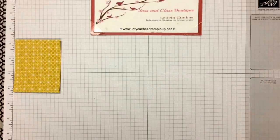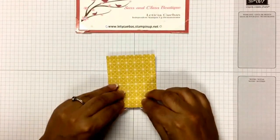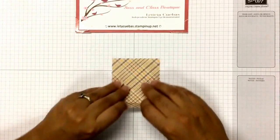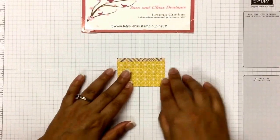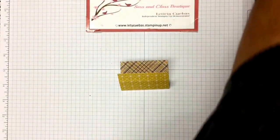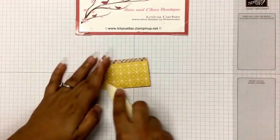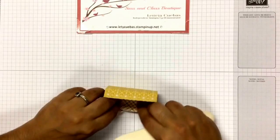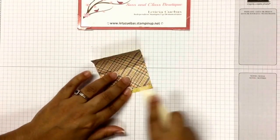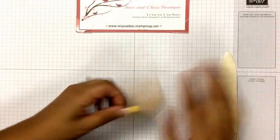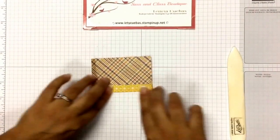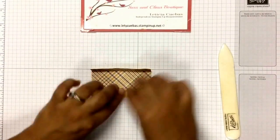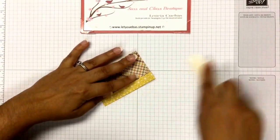That's it for the scoring. I actually need my bone folder. Sorry for the reach around. We are just going to score all of these, burnish very well. Just like this.